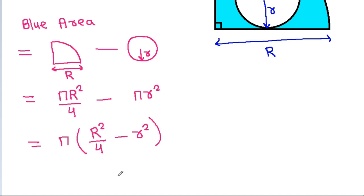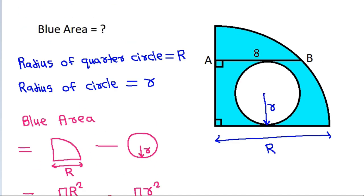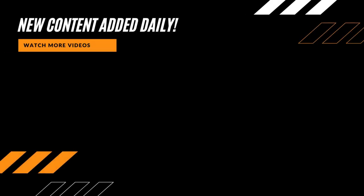Since R squared over 4 minus r squared equals 16, the blue area equals pi times 16, which is 16pi.